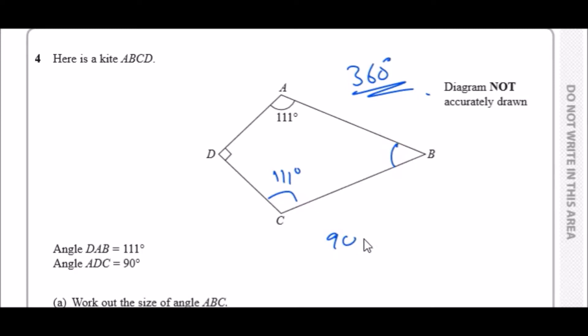90 plus 111 plus an extra 111, and then subtract that from 360. So let's do that: 90 plus, so I got 312, and minus it from 360 you should get 48 degrees. Simple, so put 48 here.